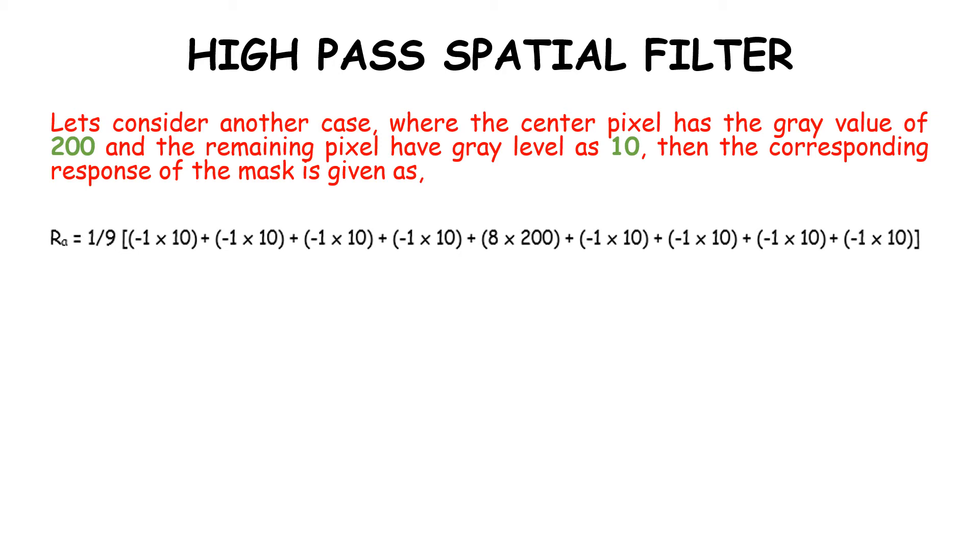This value of 8 is the center pixel with a gray value of 200. When we say (-1)(10), it means -1 is the mask value and 10 is the gray level. So r = (1/9)[(-1)(10) + ... + (8)(200) + ... + (-1)(10)] = (1/9)(-80 + 1600) = 168.